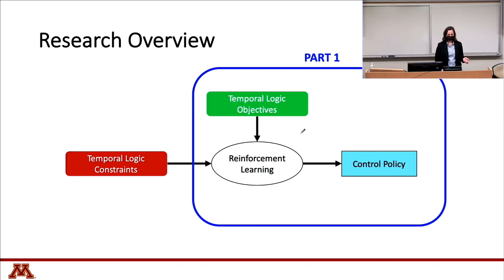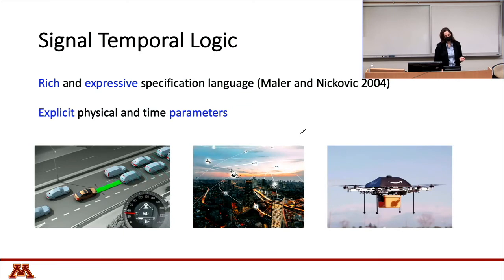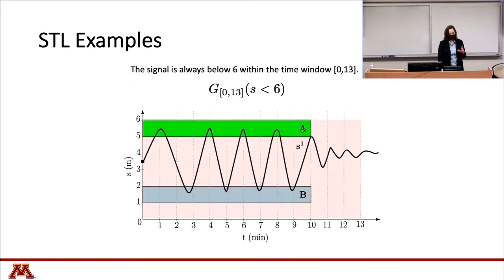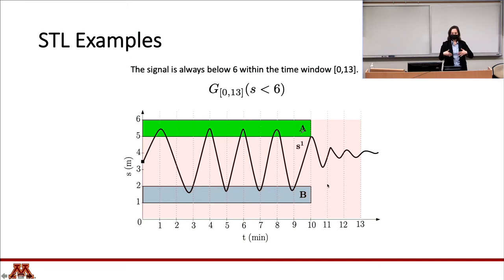Temporal logics are specification languages. One of them is signal temporal logic, or STL, which is a very rich language that explicitly defines physical and temporal parameters. For example, an STL specification can state: globally, from time 0 to 13, I want my signal to be smaller than 6. If all elements of the signal lie in that highlighted region, the signal satisfies the specification.